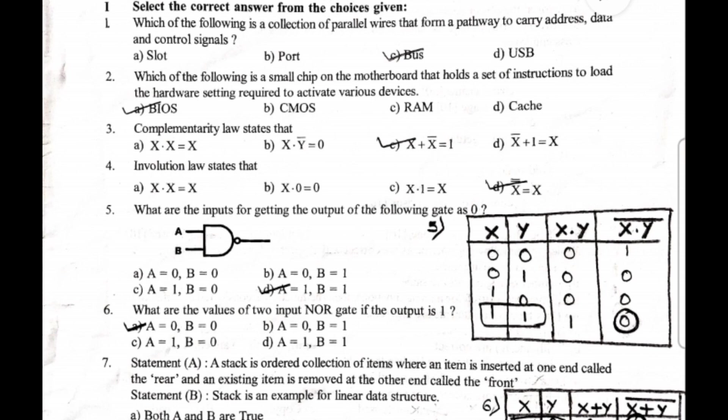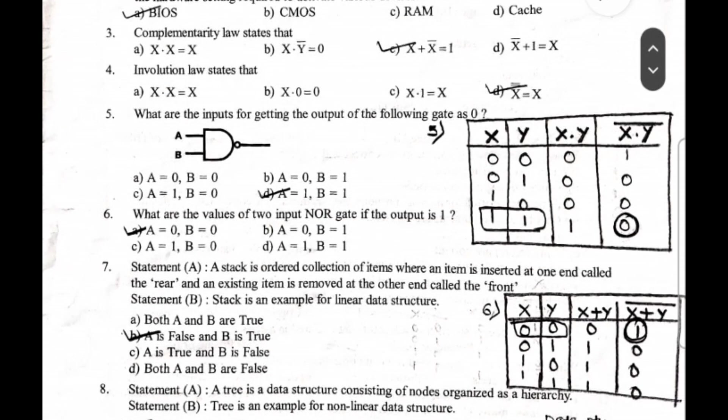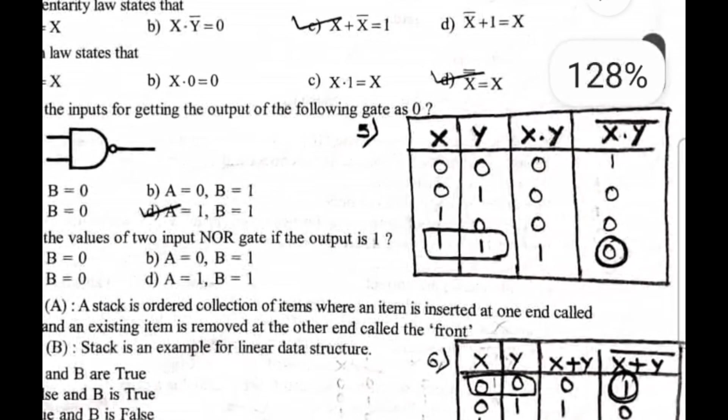Fifth question: what are the inputs for getting the output of the following gate as zero? So guys, whenever they have asked you a question like this, please draw the truth table. When you draw the truth table it will be very easy for you guys to answer the question.